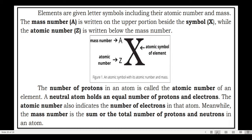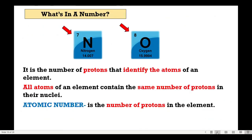The number of protons in an atom is called the atomic number. A neutral atom holds an equal number of protons and electrons. So if nitrogen has atomic number 7, then it has 7 protons, and because it is a neutral atom, it also has 7 electrons. Oxygen has atomic number 8, so 8 protons and 8 electrons. Atomic number equals number of protons, and because it's a neutral atom, equals number of electrons too.